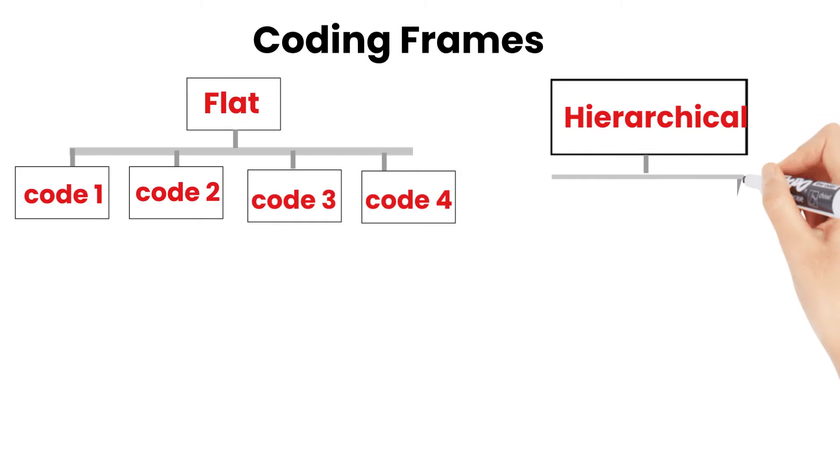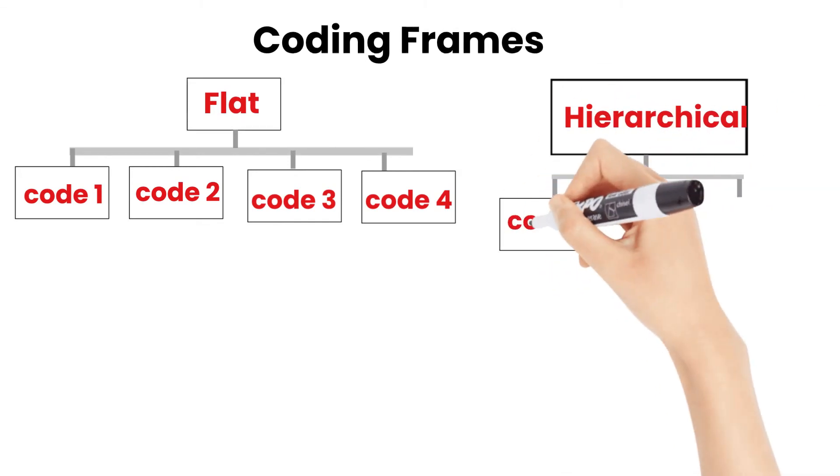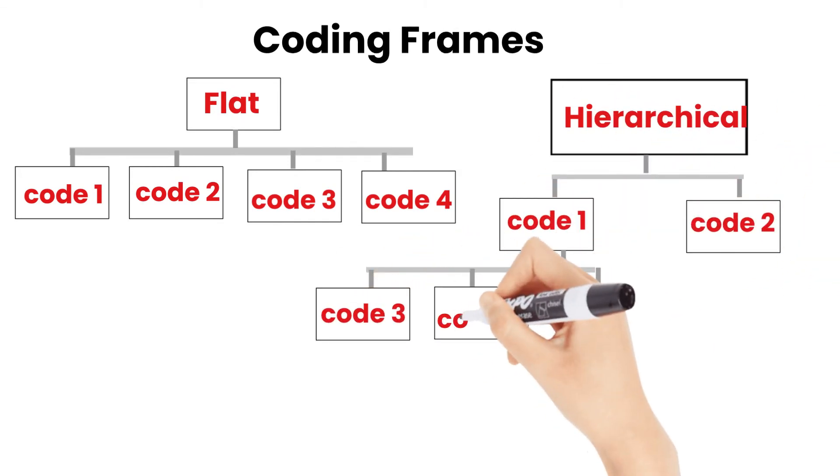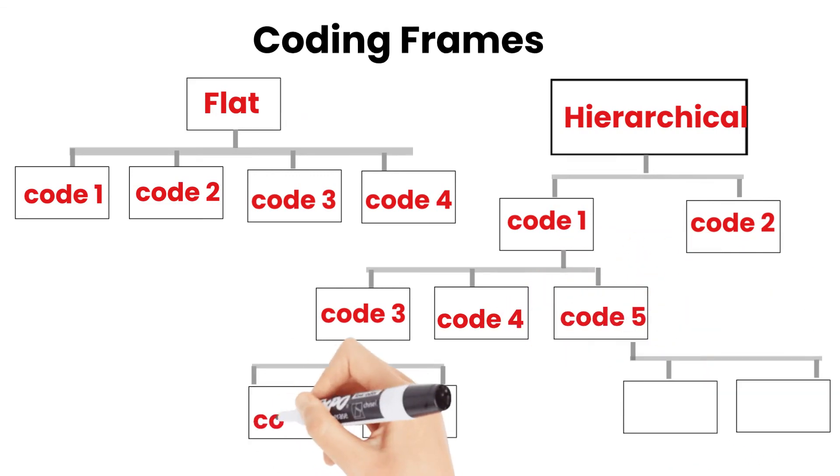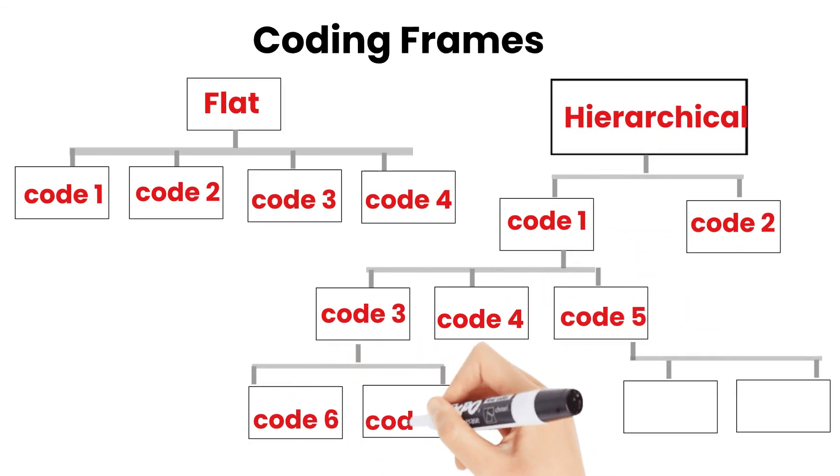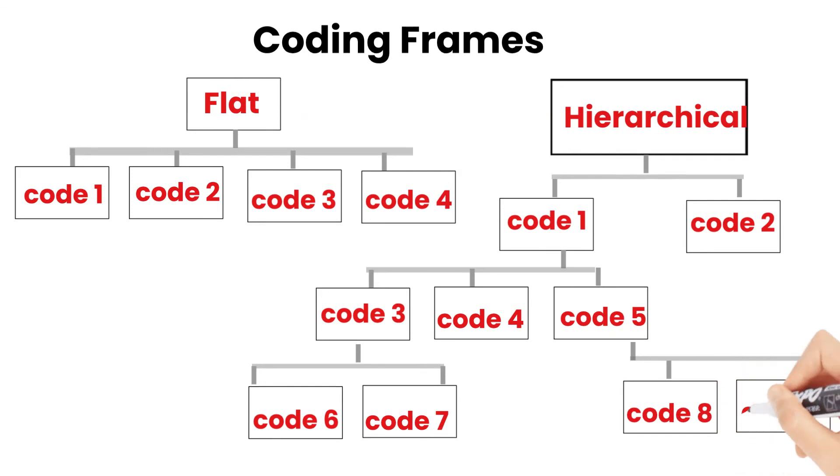The other type is hierarchical. Hierarchical frame tells you relationship among coding or codes. It is more meaningful. It may be defined into top, middle and third level coding depending upon the amount of data you have in qualitative research.